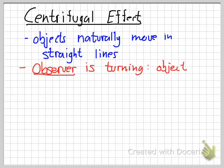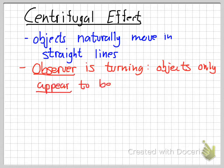So when something appears like it's moving towards the outside of a circle, that's just because the observer is the one who's turning. Objects are really continuing to move straight. If you view it from a stationary reference frame, then you can see that the object is moving in a straight line.